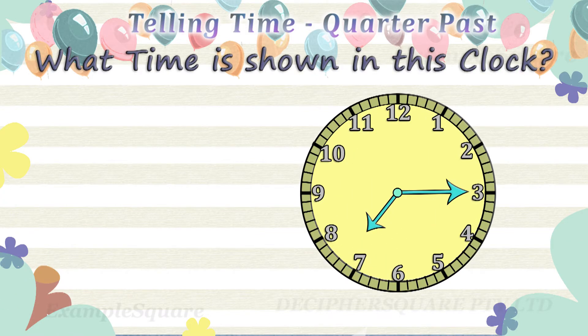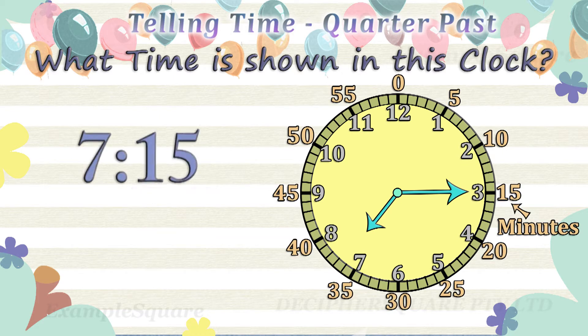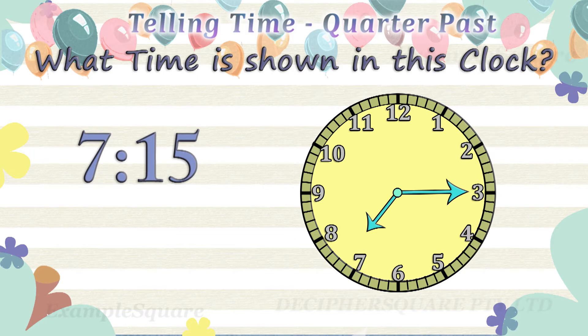What time is shown in this clock? The hour hand is pointing in between 7 and 8, so the time is 7 hours and some minutes. The minute hand is pointing at 3, referring to 15 minutes. The time is 7:15, that is 15 minutes past 7. 15 minutes is quarter of an hour, so the time is quarter past 7.